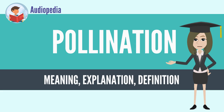A successful angiosperm pollen grain gametophyte containing the male gametes is transported to the stigma, where it germinates and its pollen tube grows down the style to the ovary. Its two gametes travel down the tube to where the gametophytes containing the female gametes are held within the carpel.